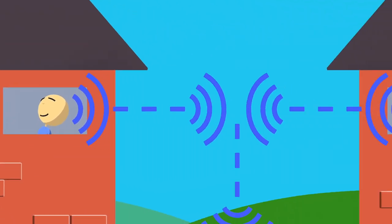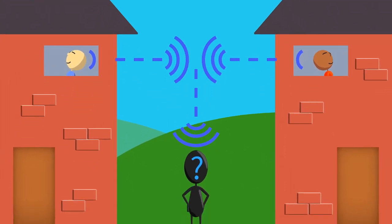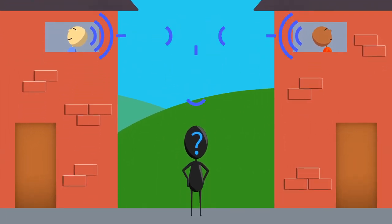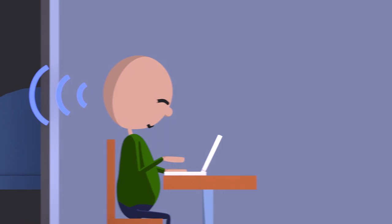And if you can instantly transmit anything you think, how can you be sure that your thoughts are still private? Will you have to worry about brain hackers?